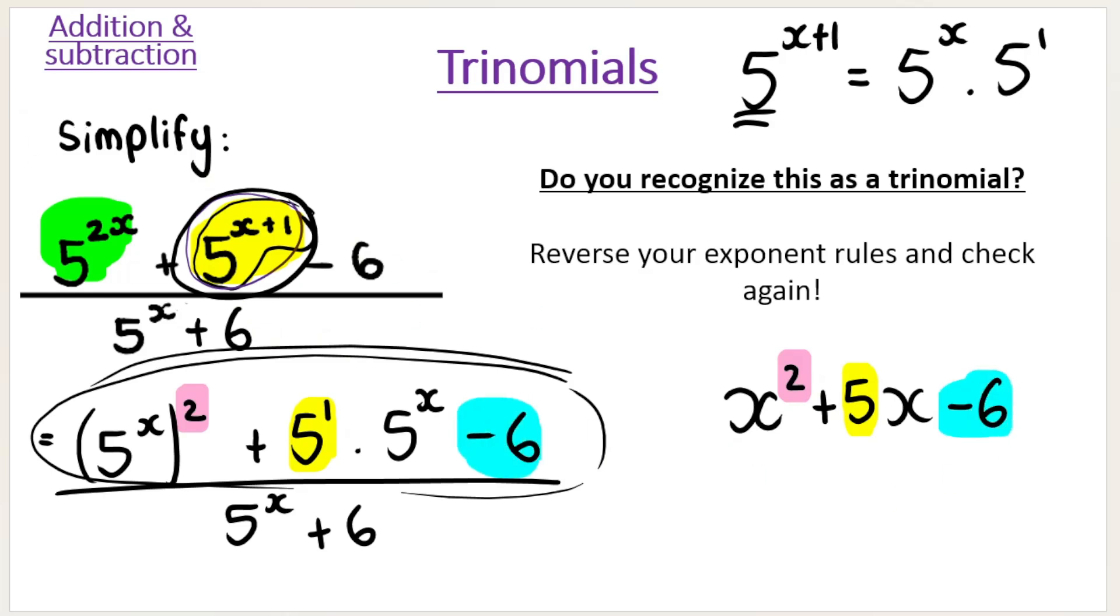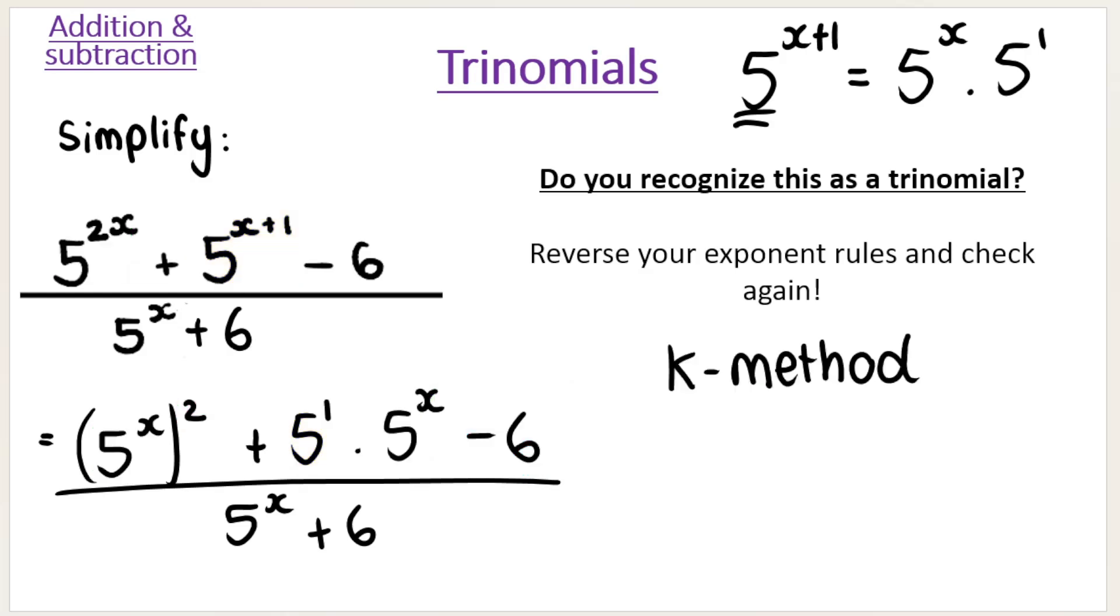But instead of the variable X, instead of the variable X, I don't have X. I have 5 to the power of X. But that is basically like my X. If you can't see that that looks like a trinomial, I don't want you to worry because I'm going to teach you a method called the K method.